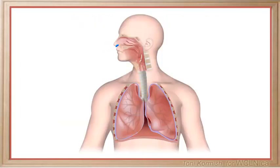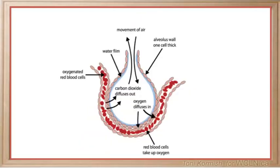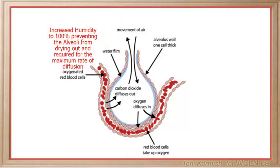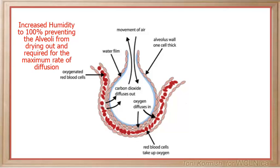The more contact that incoming air has with moist tissues, the closer the temperature of the inhaled air gets to that of the alveoli — there will be very little difference, if any, in the temperature of the incoming air with that of the surrounding tissues. One of the functions of the mucus membranes lining the respiratory tract is to increase the humidity of incoming air. Moist air prevents the alveoli from drying out, and moist tissue is essential for maximum diffusion.